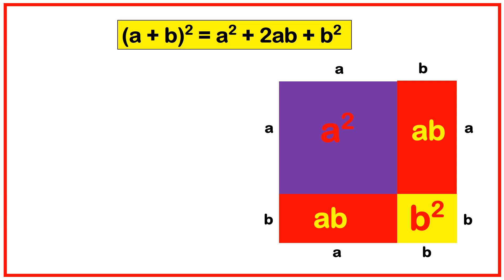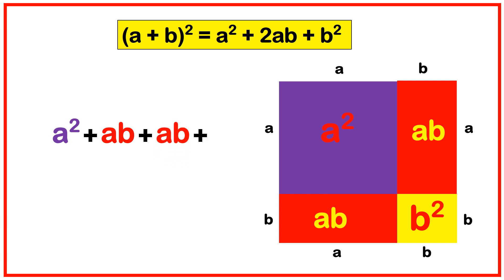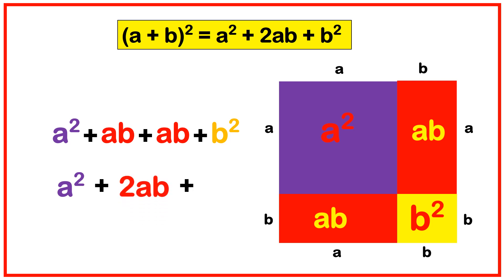If you add all four parts, you get: the first one is a square, plus the second is ab, plus the third is ab, plus the fourth is b square. So a square plus ab plus ab equals a square plus 2ab plus b square. Therefore, a plus b whole square is equal to a square plus 2ab plus b square — hence proved geometrically.